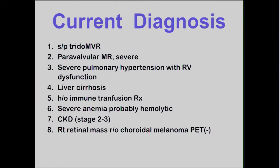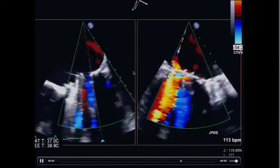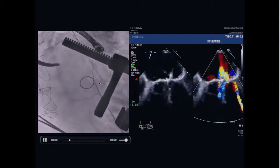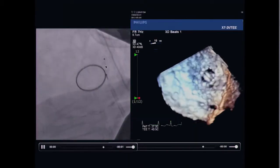I would like to show one case of paravalvular leak. This is an elderly patient who had undergone mitral valve replacement three times. The paravalvular leak was severe and he showed hemolytic anemia due to mechanical hemolysis. His comorbidities included liver cirrhosis and kidney problems. As you can see on the chest X-ray, the LA wall was calcified, making sternal puncture very difficult, so I used a hybrid procedure — a small thoracotomy with an apical approach. The echo shows the paravalvular leak at the mitral valve, and I could easily cross it with a wire and catheter, measure with a balloon, and insert an Amplatzer vascular plug.